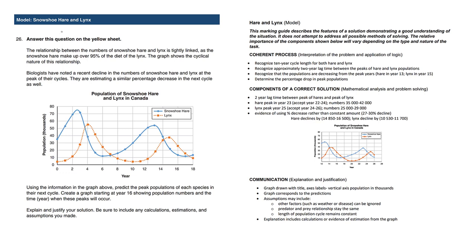Let's try to understand the snowshoe hare and lynx case study. The relationship between the number of snowshoe hare and lynx is tightly linked, as the snowshoe hare make up over 95% of the diet of the lynx. The graph shows the cyclical nature of the relationship.